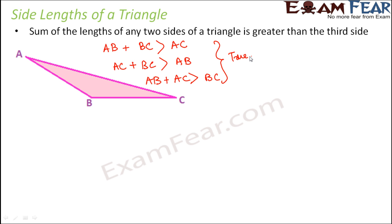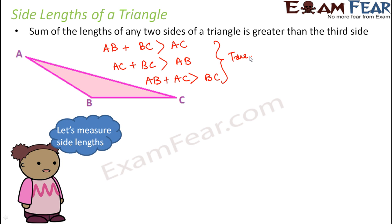So all of these relations hold true. You can pick any two sides, find their sum, and that sum will always be greater than the third side. This is true not only for one particular type of triangle — you can try it out with a right angle triangle, acute triangle, scalene triangle, or isosceles triangle. For any triangle, the sum of any two sides is always greater than the third side.